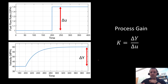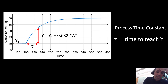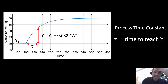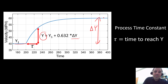The process gain tells us how much the process reacts in steady state terms to a change in input. We also want to know our time constant, which is measured as the time it takes for our process to reach 0.632 of the new steady state value. We calculate the point y = y1 + 0.632 × delta y.